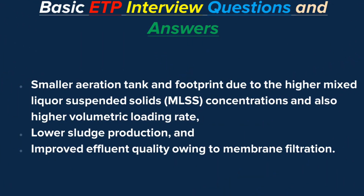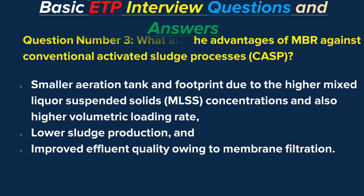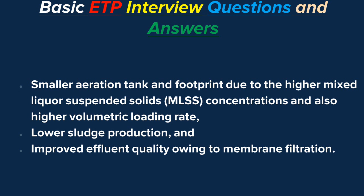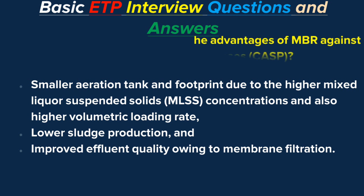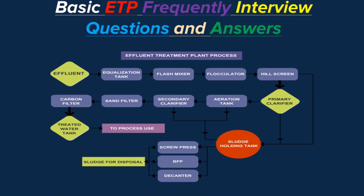The main advantages of MBR technology compared to conventional activated sludge process are: smaller aeration tank and footprint due to higher mixed liquor suspended solids (MLSS) concentrations and higher volumetric loading rate; lower sludge production; and improved effluent quality owing to membrane filtration.